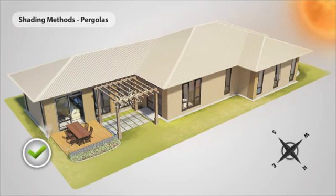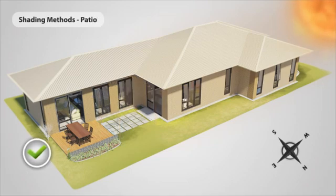The example here includes a pergola on which a deciduous vine can be grown, which provides shade in summer but allows the winter sun in when the leaves fall off. The uncovered open space allows the sun to penetrate into the living areas.